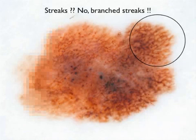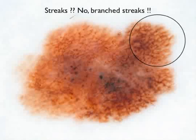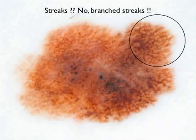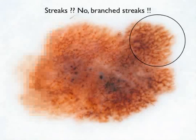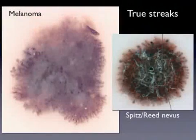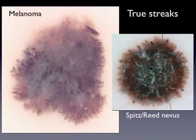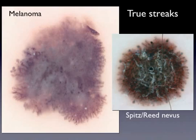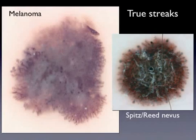The next melanoma-specific feature is streaks. They should not be confused with branched streaks, which represent only the abrupt peripheral cut-off of an atypical network, as shown in this melanoma. Streaks are defined as peripheral, pigmented, linear or bulbous projections, usually seen as a dermoscopic sign of growth of the lesion. They can be seen in melanoma and Spitz or Reed nevi, with an asymmetric or symmetric distribution around the lesion, respectively.